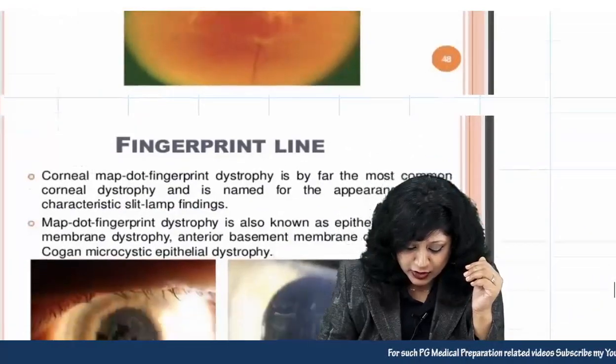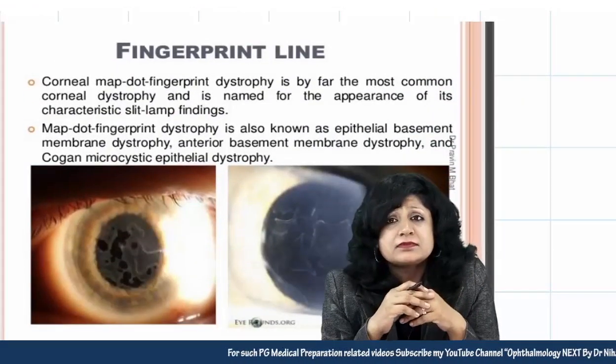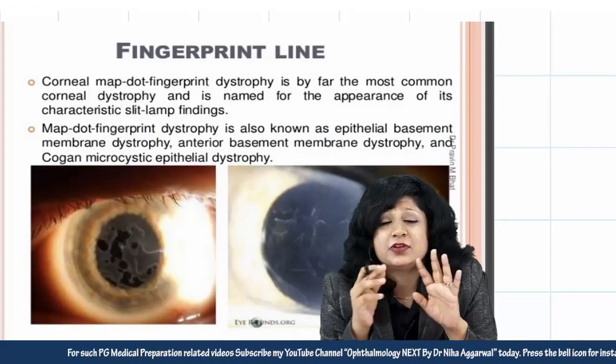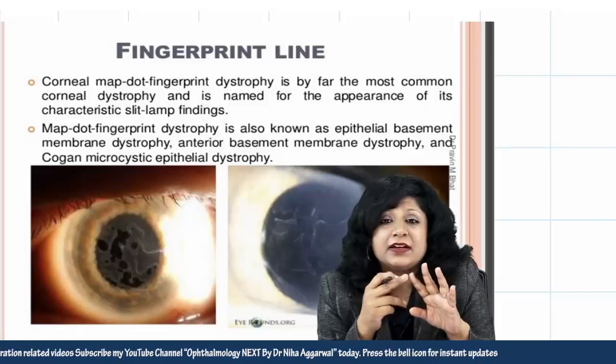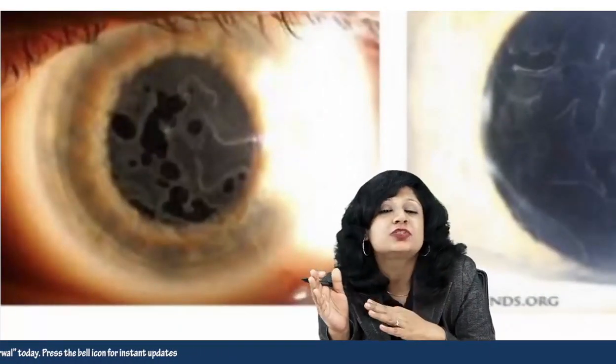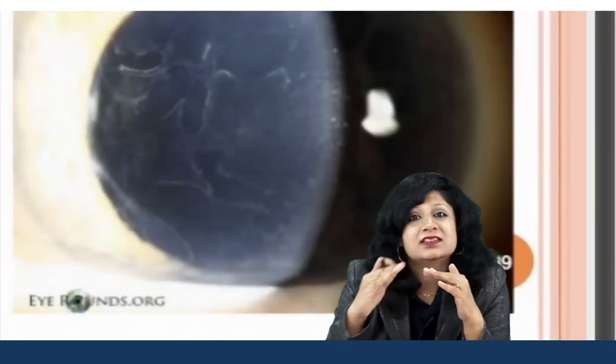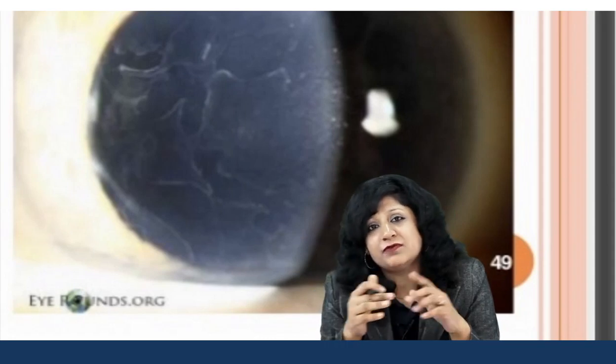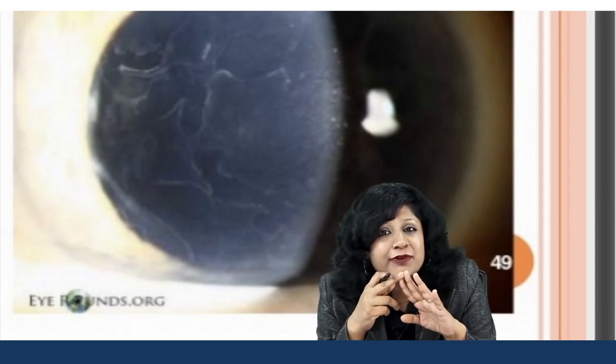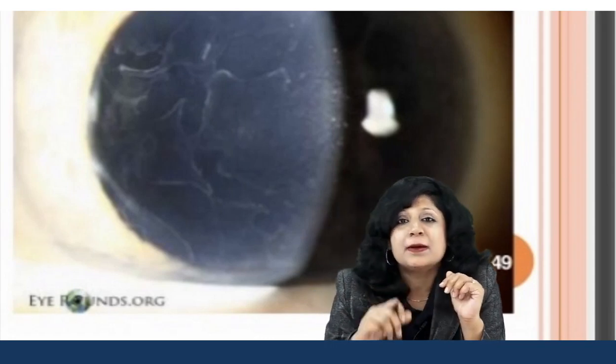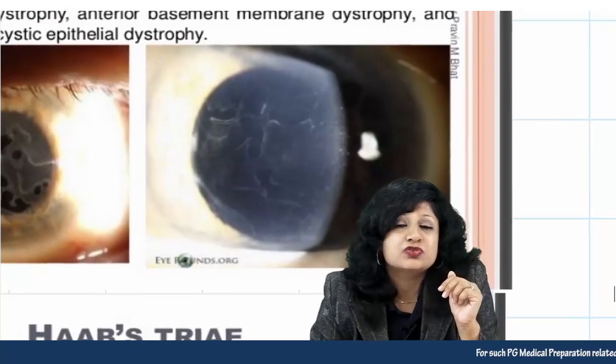Next are fingerprint lines — lines in the cornea that resemble a fingerprint. Recall the most common corneal dystrophy, the epithelial dystrophy: map-dot-fingerprint dystrophy. The different kinds of prints present give it that name. The fingerprint-resembling lines are called fingerprint lines, part of map-dot-fingerprint dystrophy of the cornea.